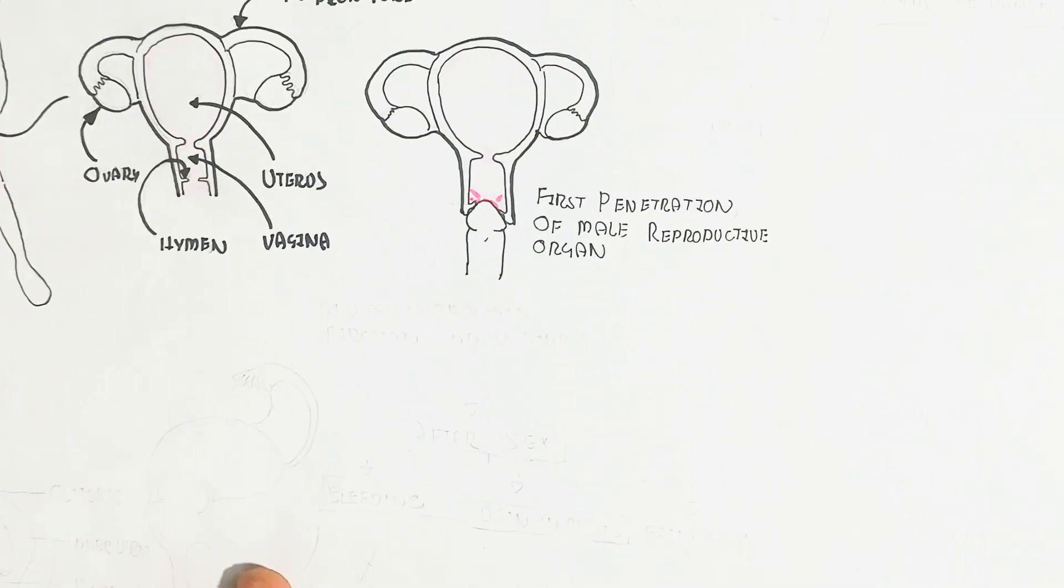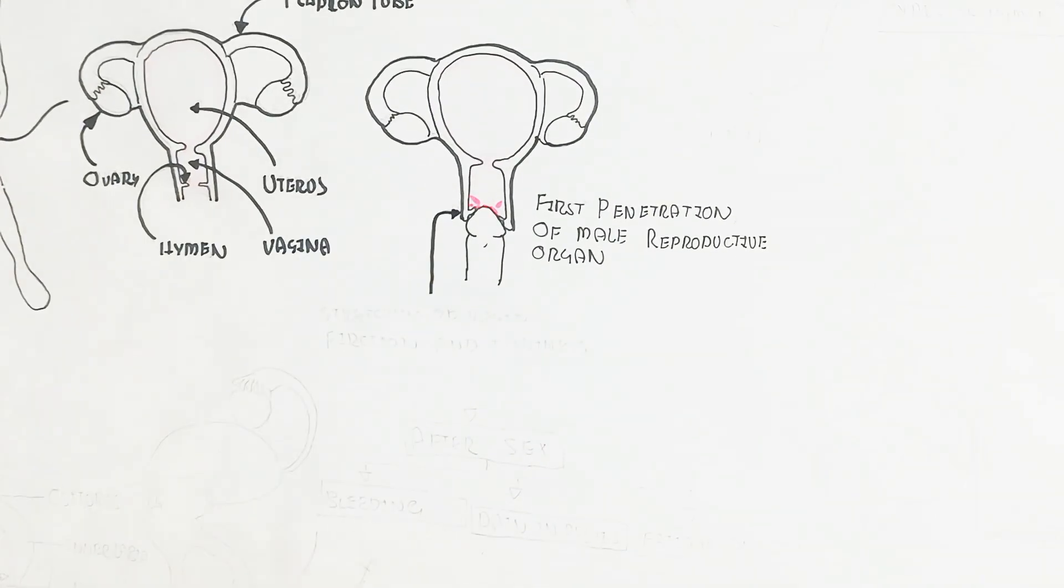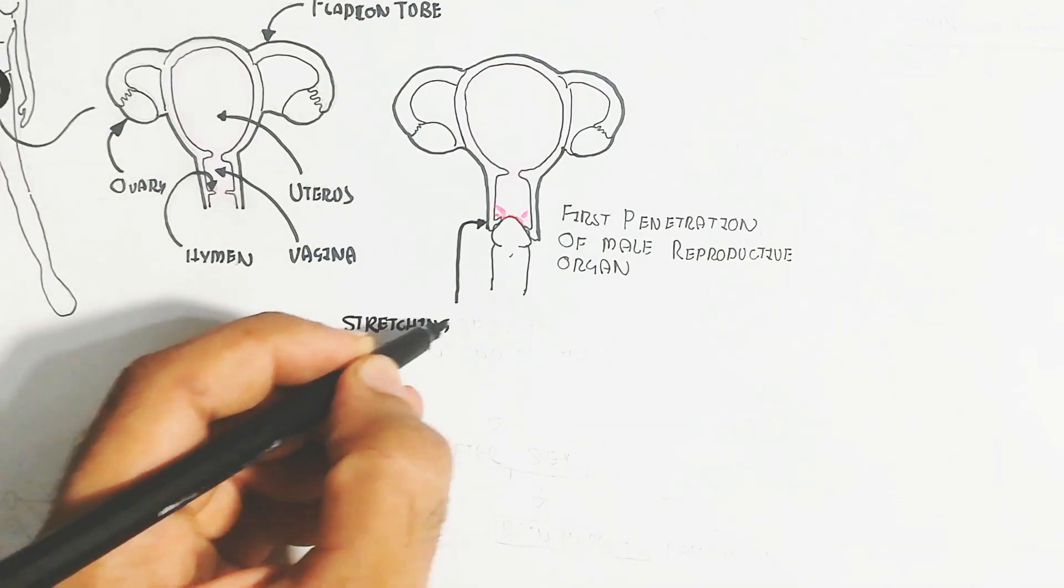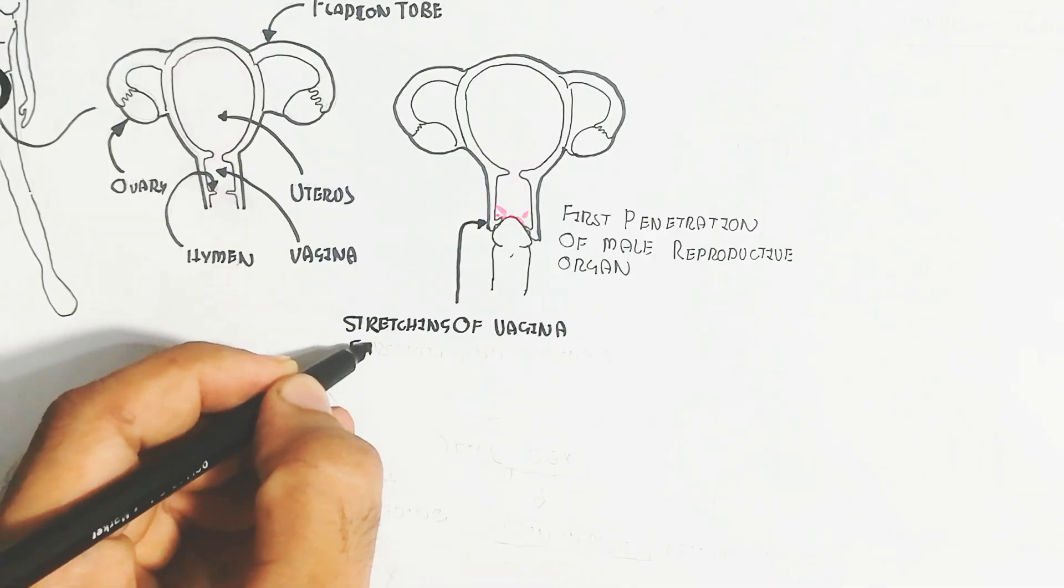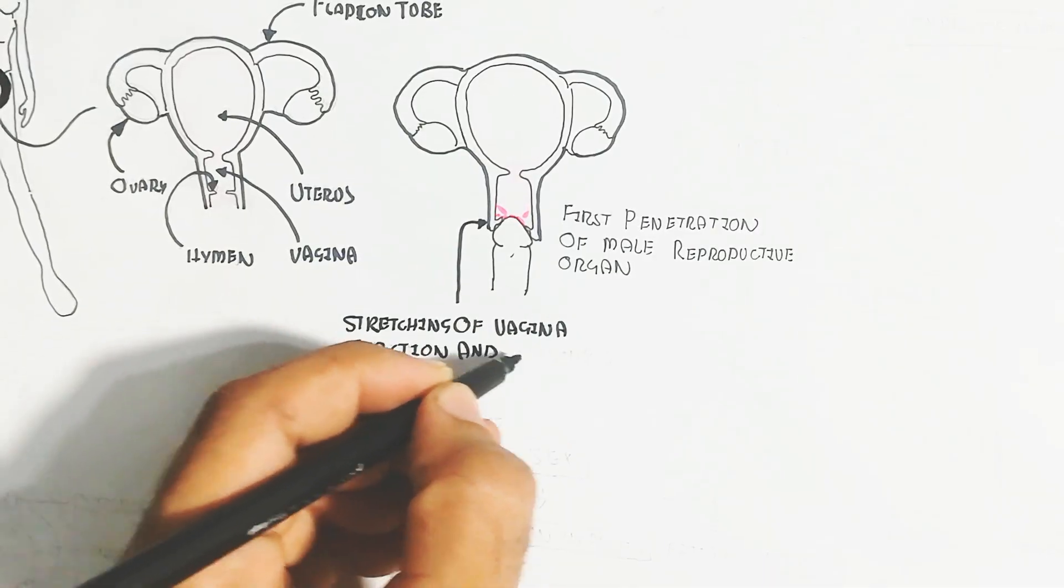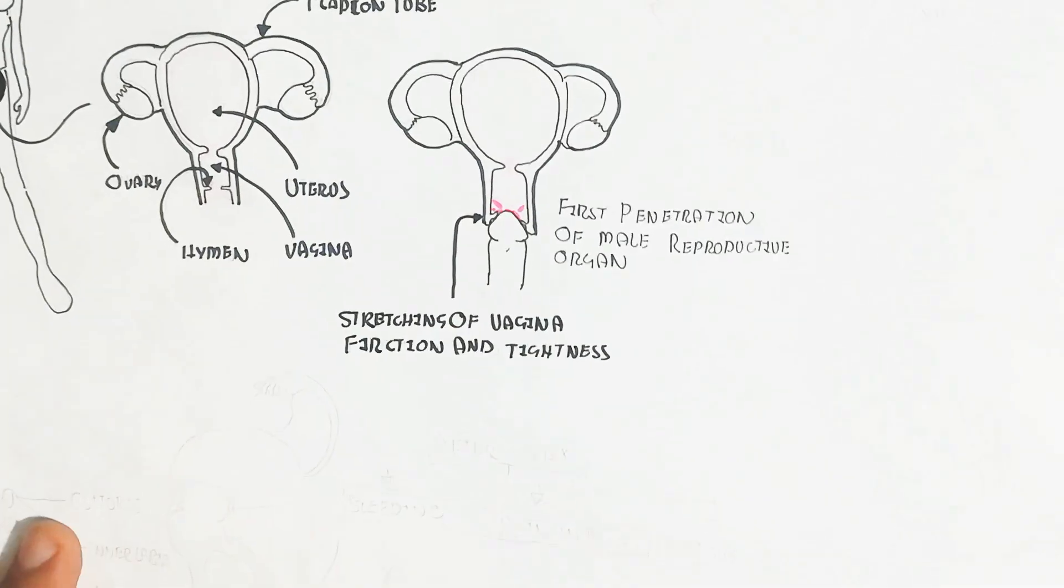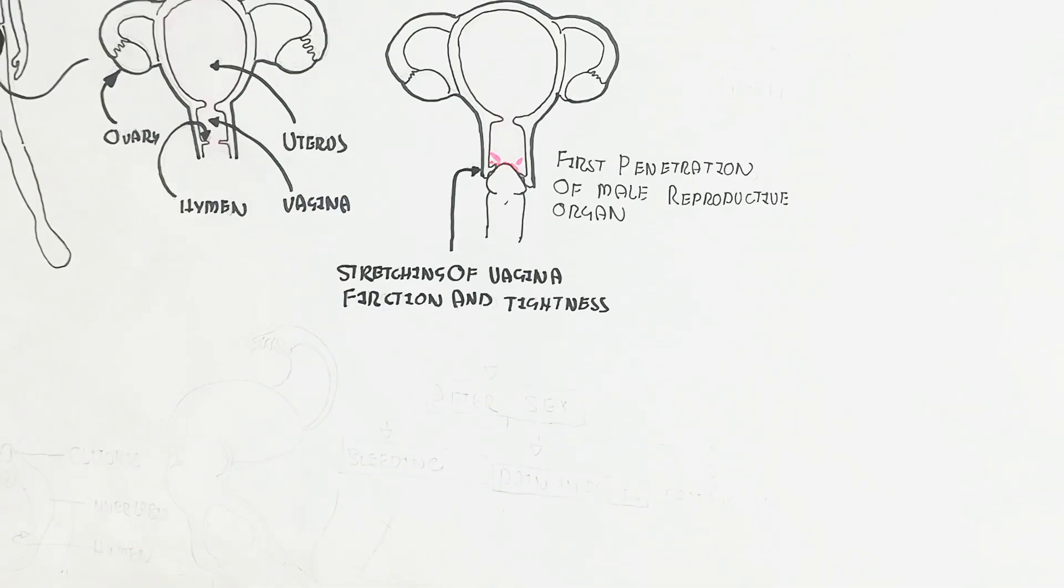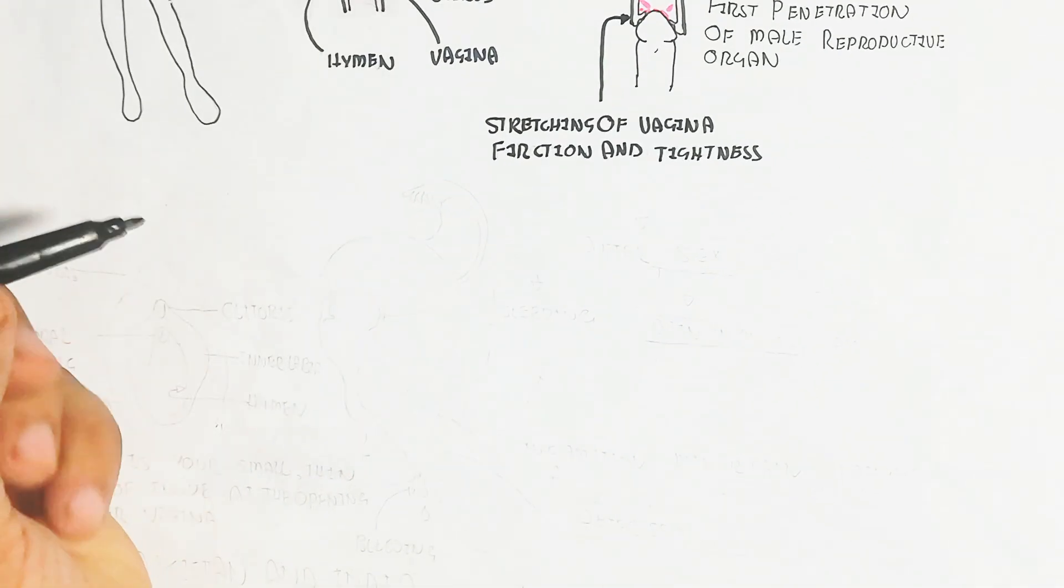Stretching of vagina and friction and tightness will cause bleeding due to rupture of the hymen. What is hymen? We will understand this also.